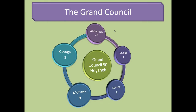When talking about the Grand Council, the first thing we want to do is call back to our Ancient Athens unit, where we also talked about another type of council. If you remember, in ancient Athens, they had something called the Council of 500, and in the Council of 500, they had 500 members or citizens from Athens chosen to lead their council, divided amongst the different tribes within Athens.